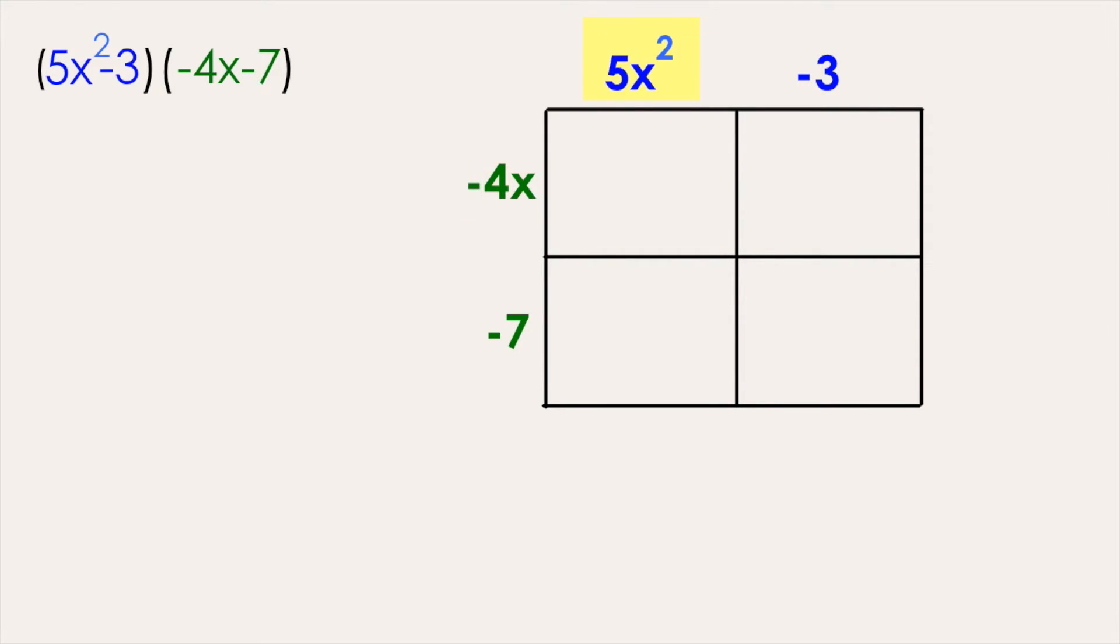starting with 5x squared times negative 4x to get negative 20x cubed. Next we can multiply negative 4x times negative 3 to get 12x, then multiply 5x squared times negative 7 to get negative 35x squared, and lastly multiply negative 7 times negative 3, which gives a positive 21.